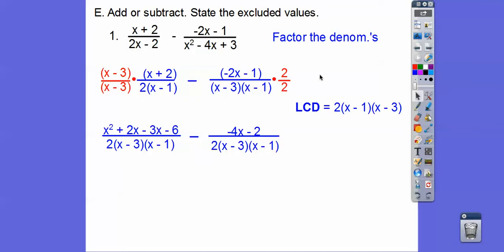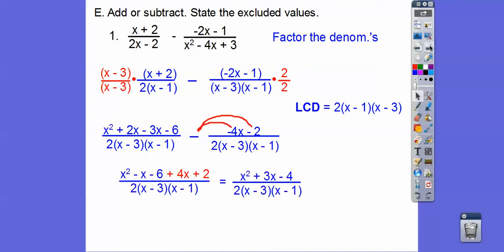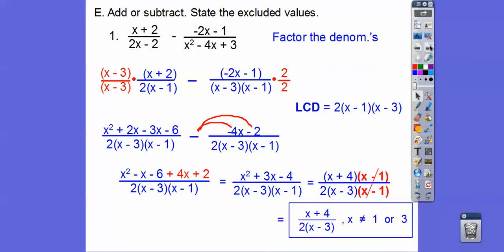Foil out. Distribute. So I distributed this 2 through. And then now what I'm going to do is clean this up. This is going to become minus x right here, and then put this minus through. So that's going to change it to a plus 4x plus 2. And then simplify that. And then you can factor that. And then the x minus 1's cancel. And then it said state the excluded values. So there's our answer, and there are our excluded values.